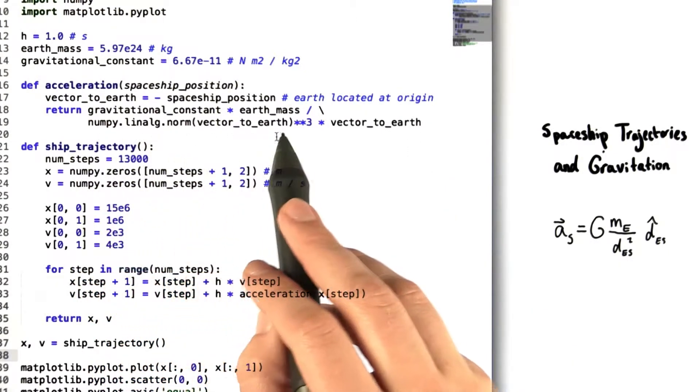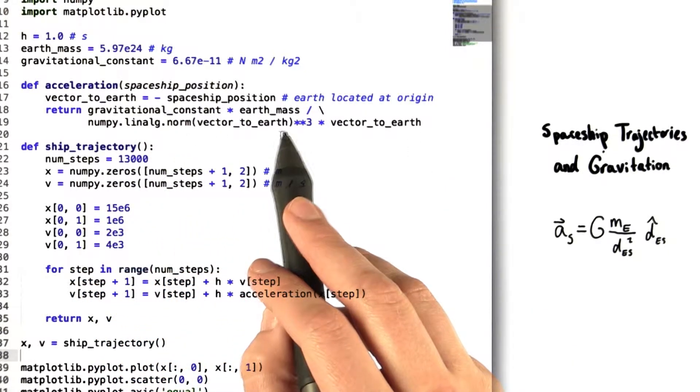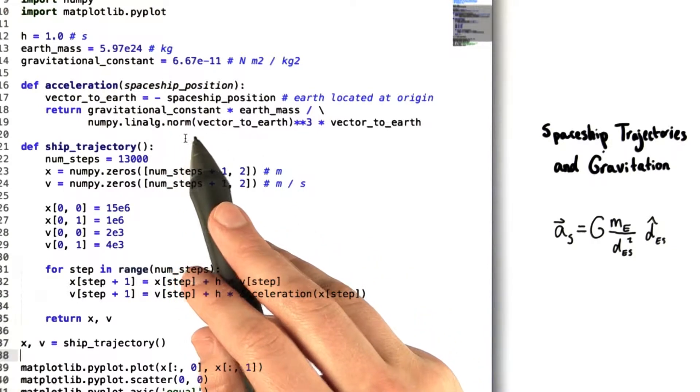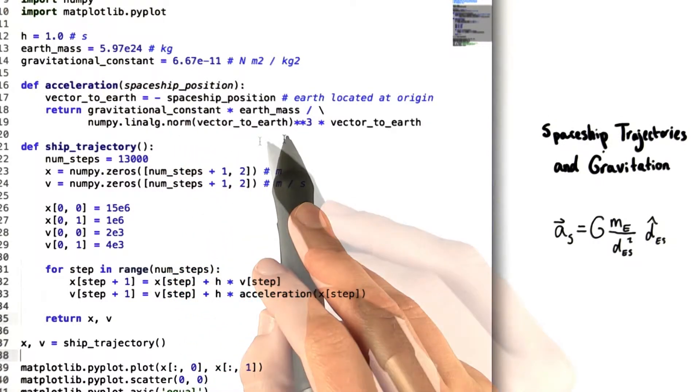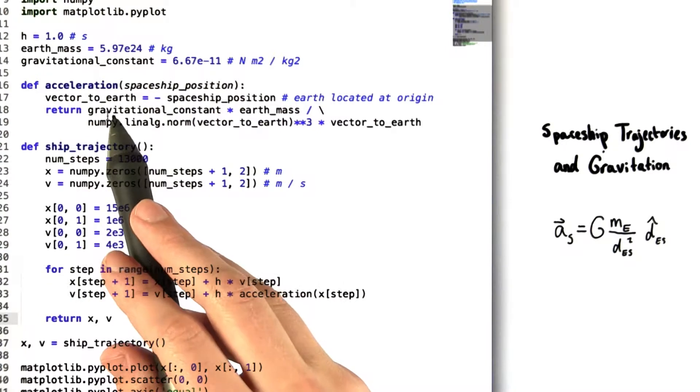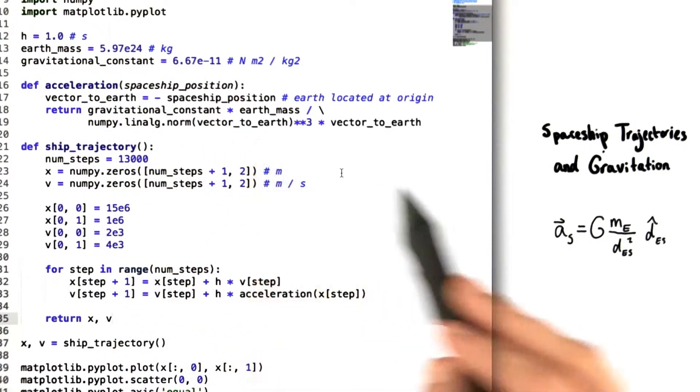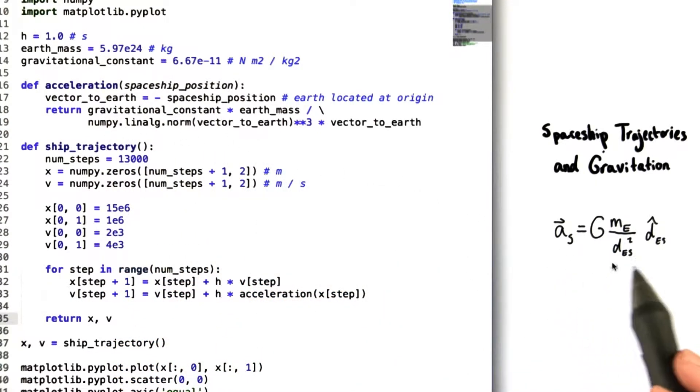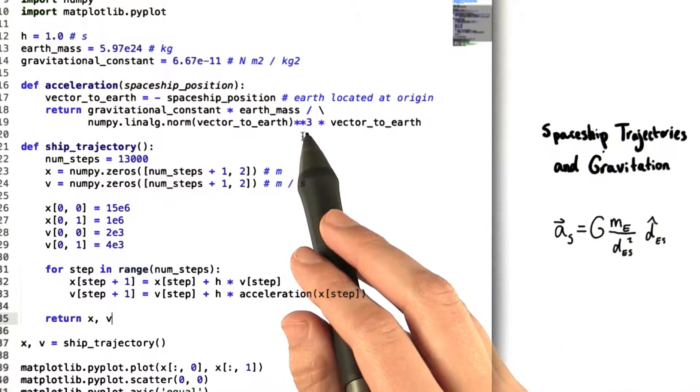The first thing we have right here is a method from the linear algebra library, which gives us the norm or the magnitude of whatever vector we put into it. We are inputting the vector from the spaceship to the Earth. Now over here, we can see in the original equation that the denominator is just the norm of that vector squared. But in the code, we have it to the third power.